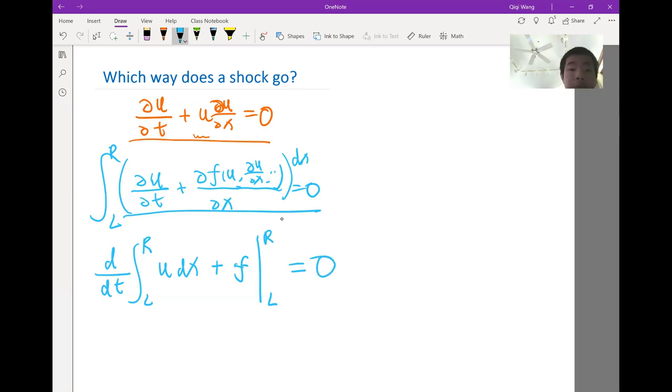So now, another way to interpret this is the time derivative of the total conserved sub is equal to the difference between the flux at the left of the domain and on the right of the domain. Here, I am actually using the fundamental theorem of calculus, as Megan pointed out.